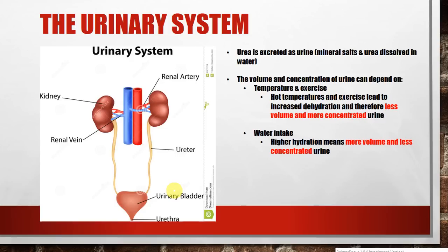So this links us to the urinary system. We've broken down the proteins and made urea, which is essentially poisonous — it's a waste product like carbon dioxide. Carbon dioxide is a waste product that's excreted via our lungs. Well, we need a way to excrete the urea that we've essentially created from deamination. Urea is excreted as what we call urine, and you should be familiar with urine.